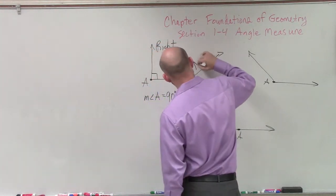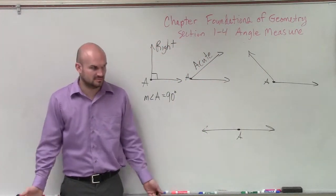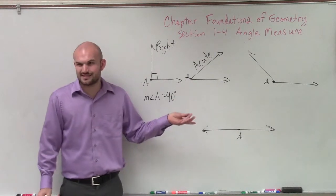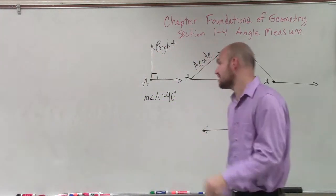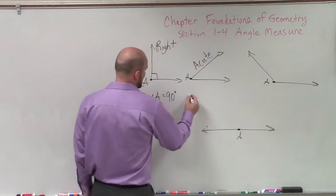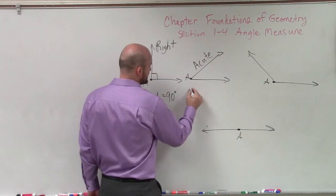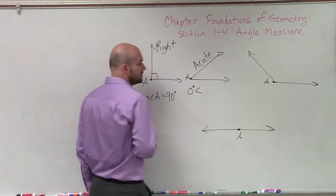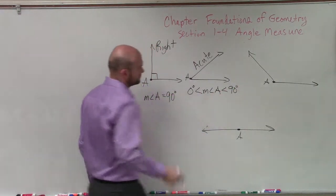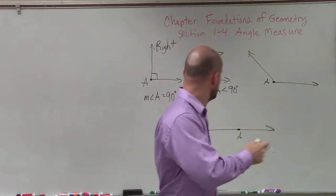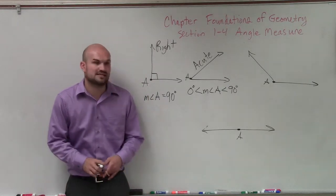Then here is what we call our acute angle. And the acute, you can obviously see it's smaller than a right angle. It's obviously smaller. Can it be less than zero though? No. The measurement of the angle can't be less than zero — but we will talk about direction being negative. So the measure of angle A has to be greater than zero degrees but less than 90 degrees. So: zero degrees is less than the measure of angle A, which has to be less than 90 degrees.